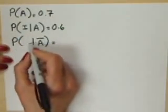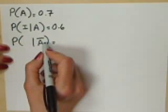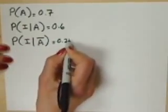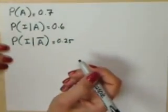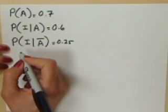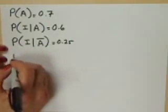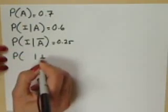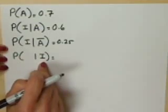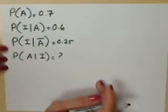Given that they didn't advertise, what is the probability that they had an increase in sales? That's 0.25 from the problem. So now the question is: what is the probability that a randomly selected store with an increase in sales advertised? So we're looking for the probability — given that we have an increase in sales for a store — that they, in fact, advertised.